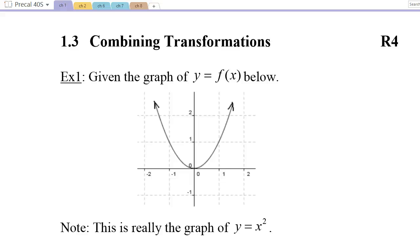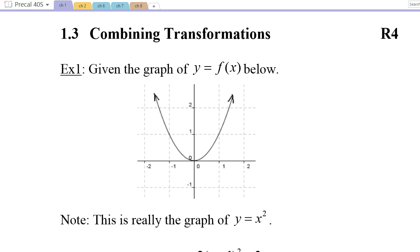Today's lesson, 1.3, is on combining transformations. So in 1.1 and 1.2, we've done a bunch of transformations. We've done translations, which is left and right shifts and up and down shifts. And then in 1.2, we did reflections and stretches. So now we're going to be putting those all together.